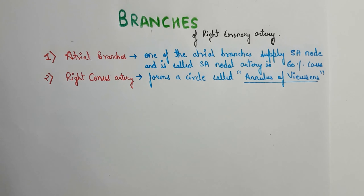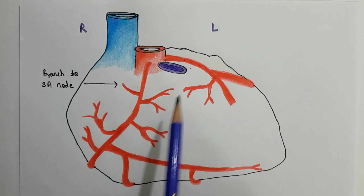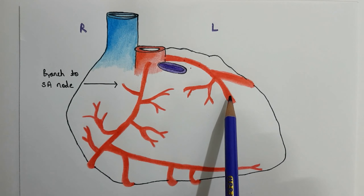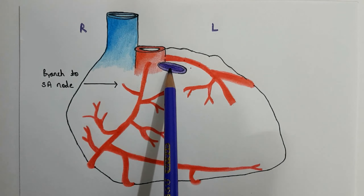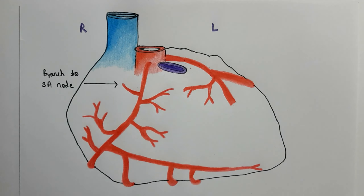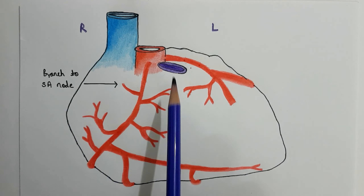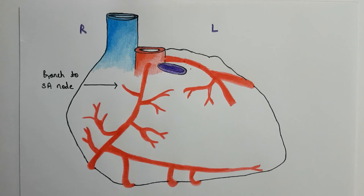The second branch is the right conus artery, which forms an arterial circle around the pulmonary trunk called the annulus of fusions. This circle is formed between the right conus artery and a similar branch from the left coronary artery, and therefore it is known as the annulus of fusions.